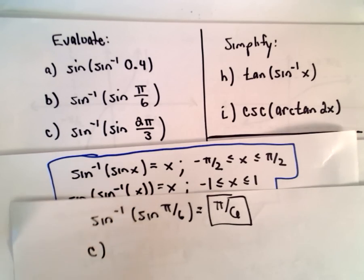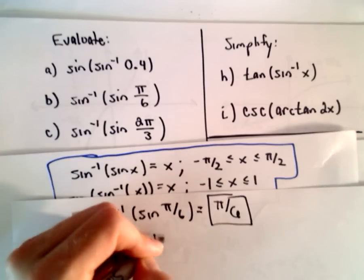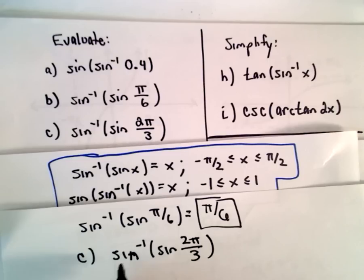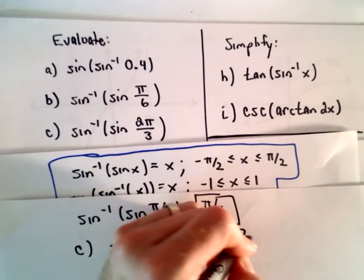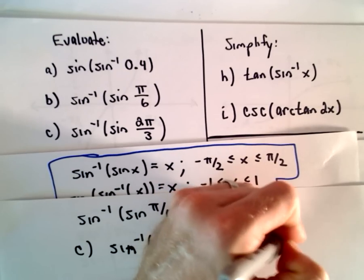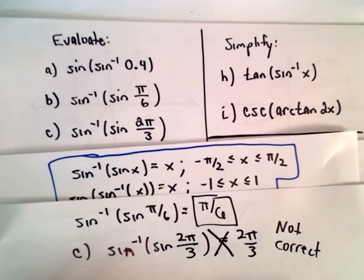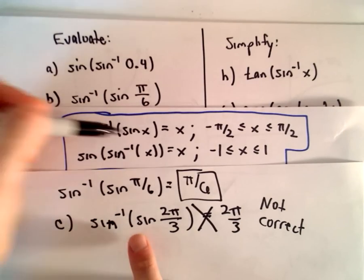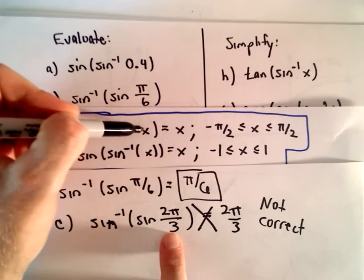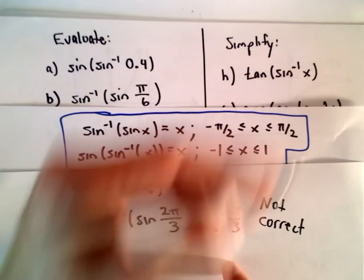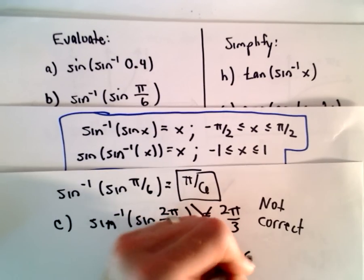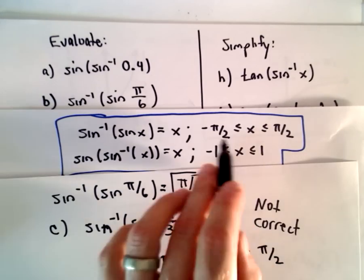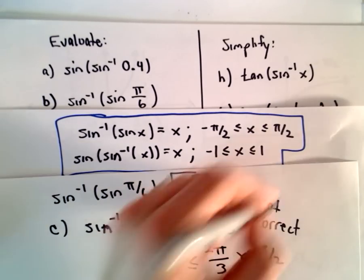For part C, this is where we have to be careful. We have inverse sine of sine of 2π/3. It would be easy to say the inverse sine and sine cancel out and we get 2π/3, but that is absolutely not correct. I would put this on a quiz or test just to make sure people are paying attention to these intervals. The cancellation only works if the angle is between negative π/2 and positive π/2, and 2π/3 is not in that interval — it's greater than π/2.